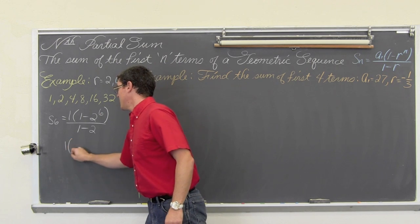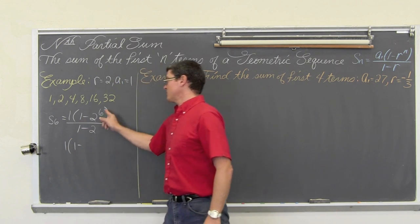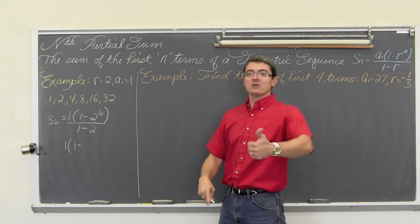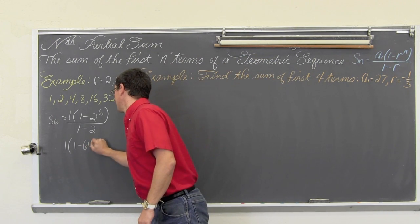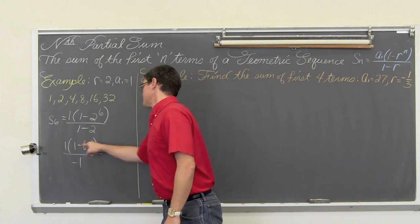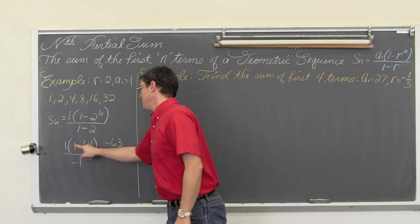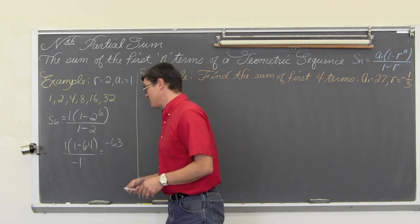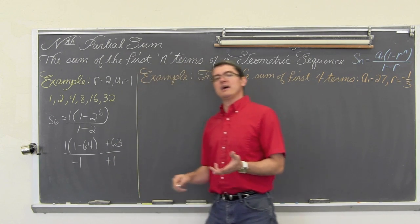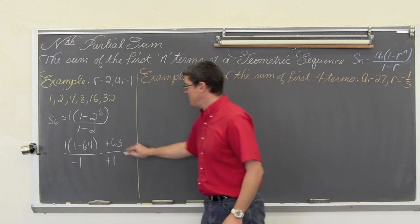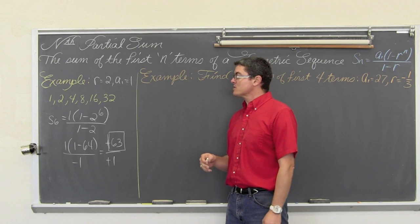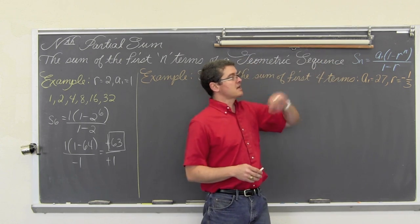We have 1 times, this is going to be 1 minus, 2 to the 6 is 64, over 1 minus 2 which is negative 1. This comes out to be negative 63, because 1 minus 64 is negative 63, over negative 1, and we do know that when we divide two negatives we get a positive answer. So indeed, we do, at least at this very simple example, check out that the partial sum formula does actually work.